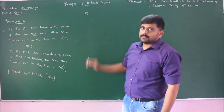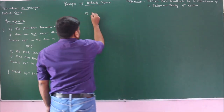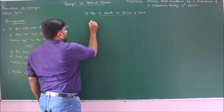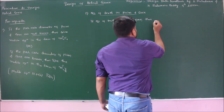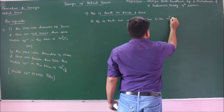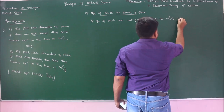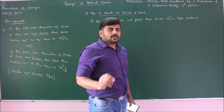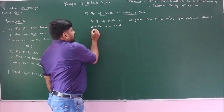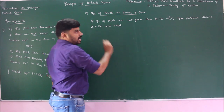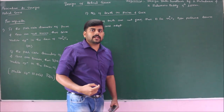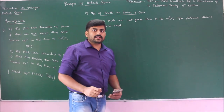Moving on to our second prerequisite — number of teeth on pinion and gear. Similar to the design of spur gears, if the number of teeth are not given, then for mn³·Cv type problems — that is, problems in which the pitch circle diameter is not known — assume number of teeth on pinion as 20, adopt that value, and solve the problem.